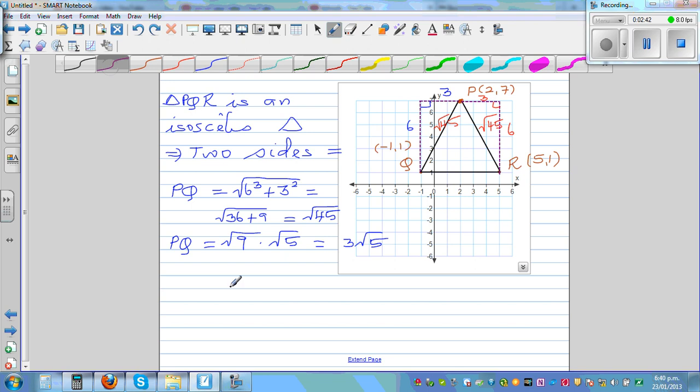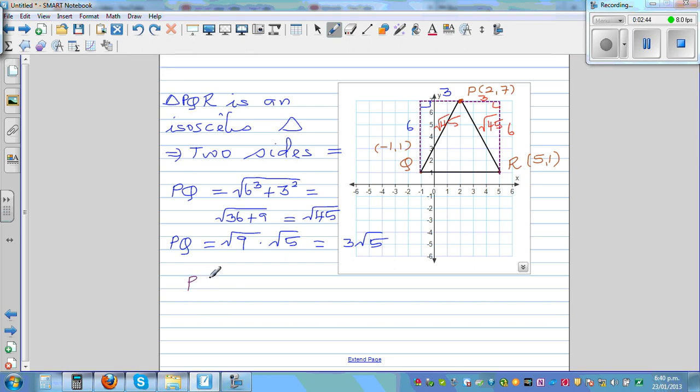So you can say, PQ is equal to PR. This tells me, this is an isosceles triangle.